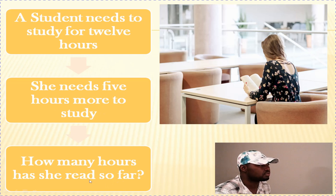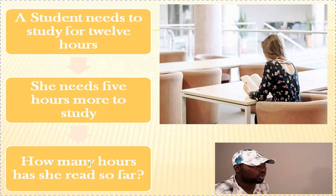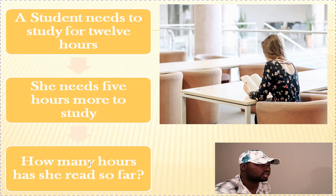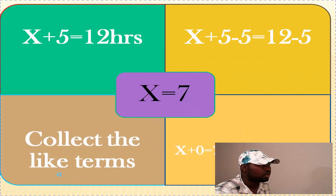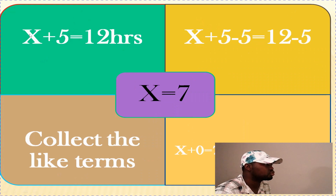Now, this is not a really hard question. We can use common sense knowing she needs to study for 12 hours, and if she needs only five more hours, we can figure out how many hours she has already studied. But to use the knowledge of algebra, we can represent the amount of hours she has already studied with x.